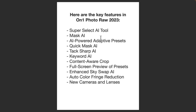They have Mask AI — I've talked about it in some videos and will do a dedicated video on it. They have AI-powered adaptive presets, which I did a video on — the software determines what's in the scene and applies the preset accordingly. They also have Quick Mask AI, which I'll cover very soon, and TechSharp AI, which is AI sharpening of your images — very, very effective, and I've done a video on that. They have Keyword AI, which I'll cover in a future video, and Content-Aware Crop, which I was experimenting with today and found quite effective.